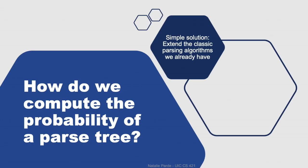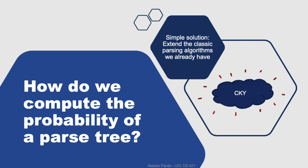When working with probabilistic context-free grammars, we can use the probabilities of different parse trees to disambiguate between possible syntactic parses. However, how do we actually compute the probabilities of our parse trees? A simple approach is to extend the classic parsing algorithms we already have, and the most popular way of doing so is through probabilistic CKY.